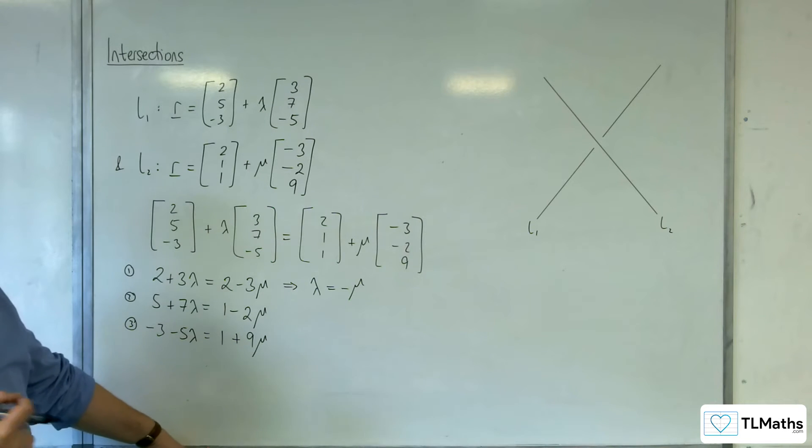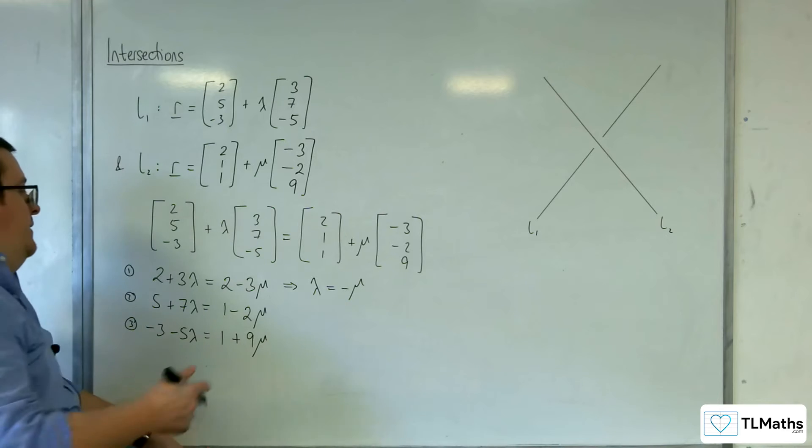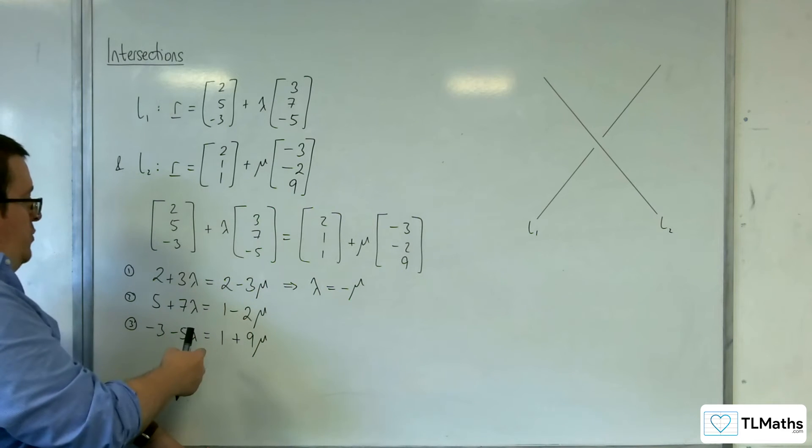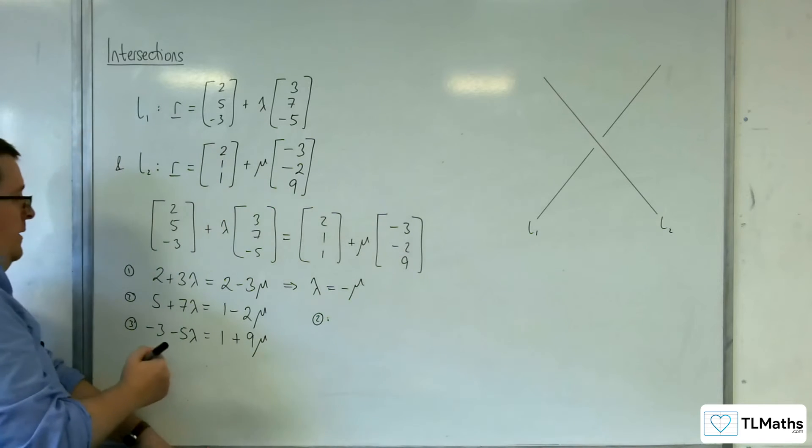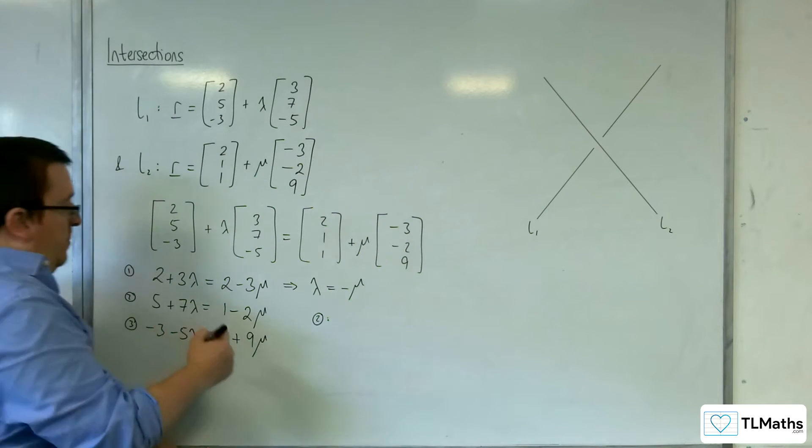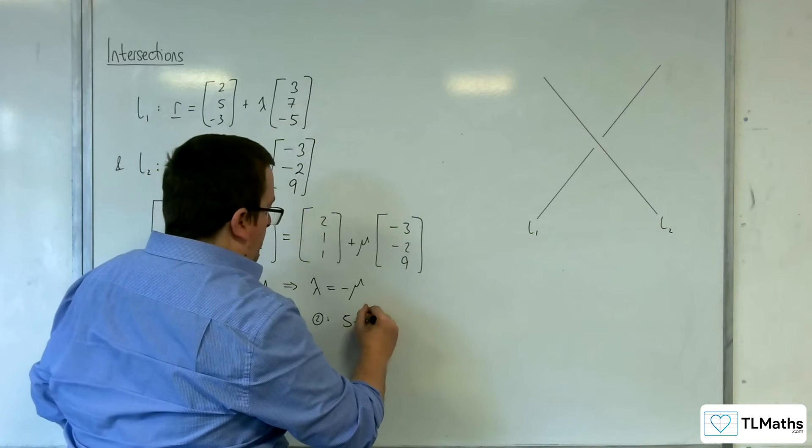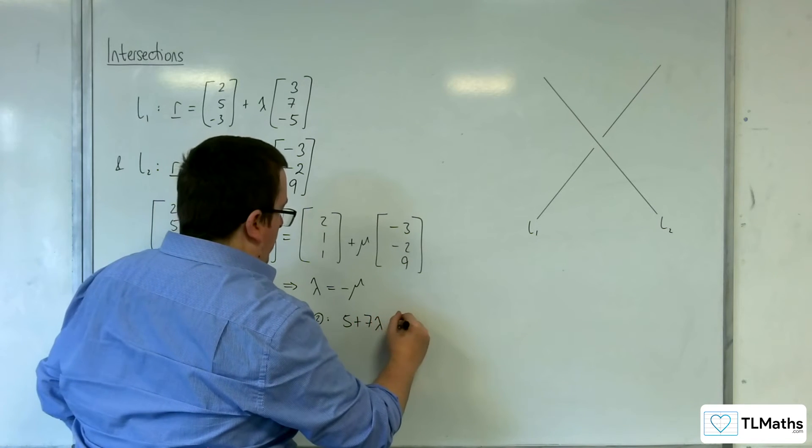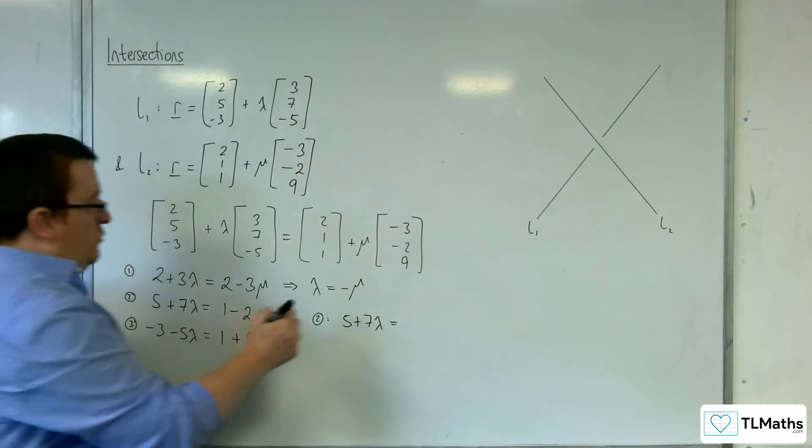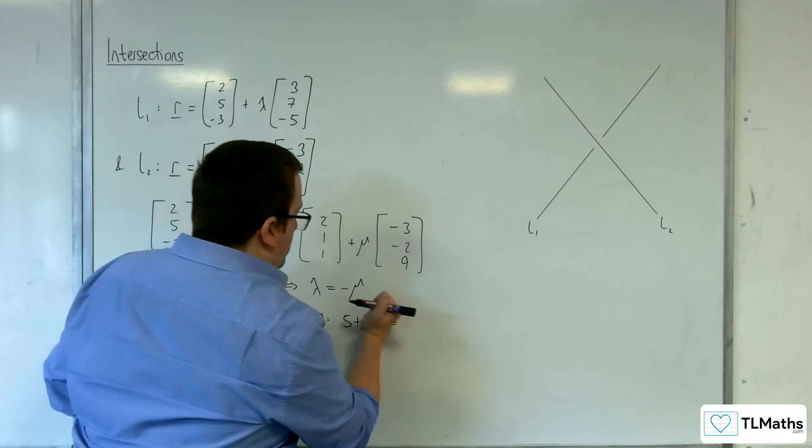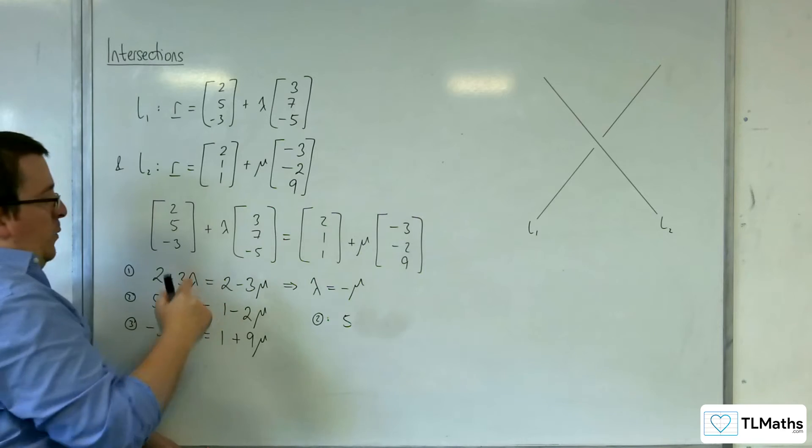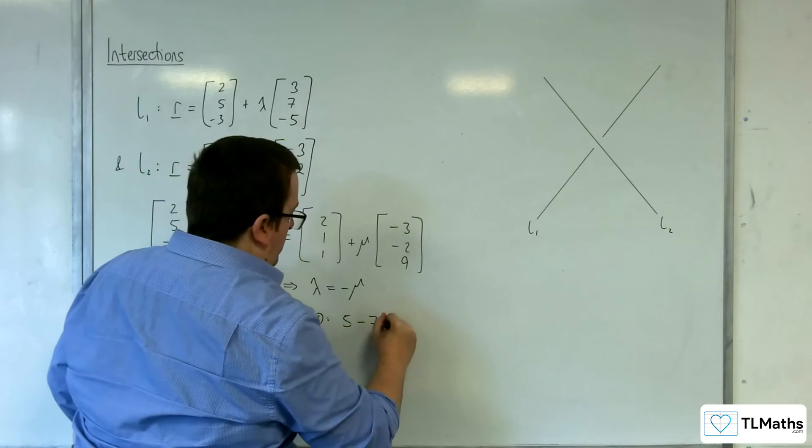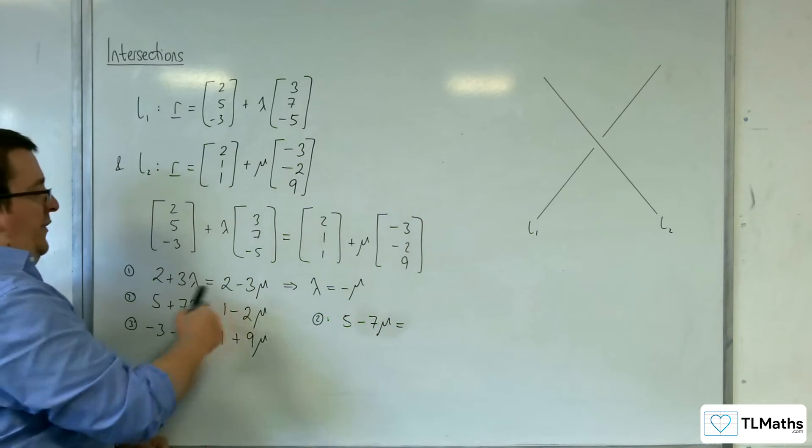So if that's the case, I can then substitute that into one of these two other equations. So let's say I substitute that into equation 2, and say 5 plus 7 lambda. Well actually I can replace, I'll replace the lambda with mu. So 5 take away 7 mu would be equal to 1 take away 2 mu.